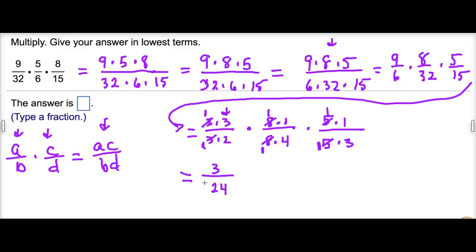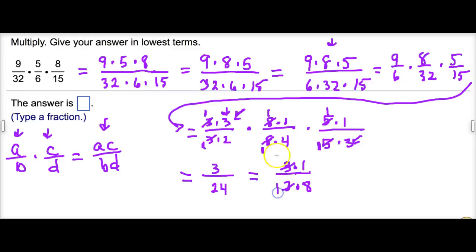So we have three over 24. One other thing we could have done is notice the common factor of three in the numerator and denominator here. Three is three times one, and 24 is three times eight, so they share a common factor of three. That reduces to one, and our final answer is one-eighth. The reason I did it the long way first is just to show you why we're able to reduce things, and our answer ends up being one-eighth.